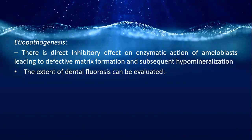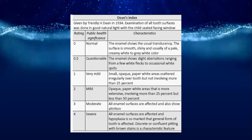The etiopathogenesis involves a direct inhibitory effect on the enzymatic action of ameloblasts, leading to defective matrix formation and subsequent hypermineralization. The extent of fluorosis can be evaluated using Dean's Fluorosis Index, described by Trendley H. Dean in 1934, involving examination of all tooth surfaces.